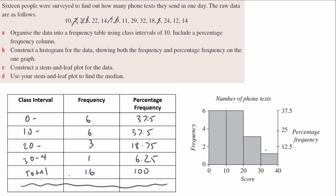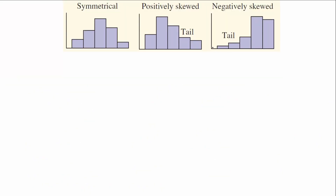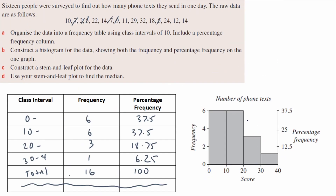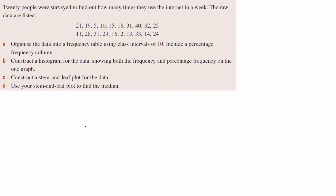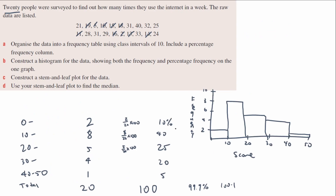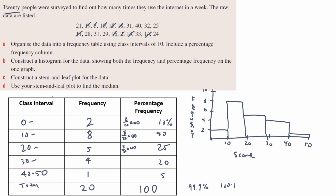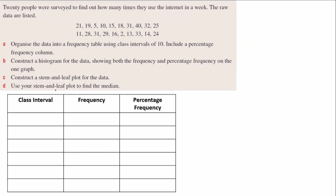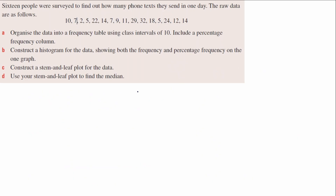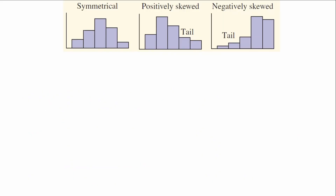Looking at the first histogram, it has a tail on the right, so it is positively skewed. The histogram we worked through earlier also has a tail on the right, so that one is positively skewed as well. Make sure you have those diagrams in your book so you can refer to them later. That brings us to the end of this video — thanks for watching and I'll see you all back online.